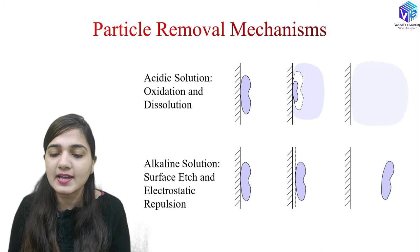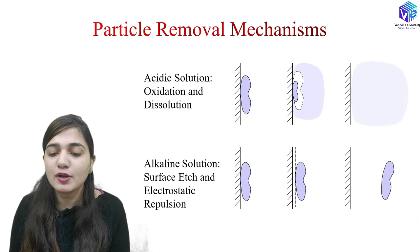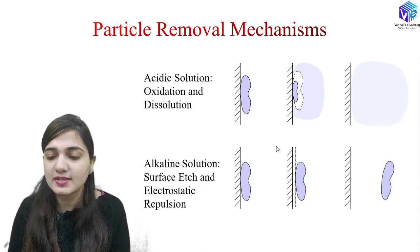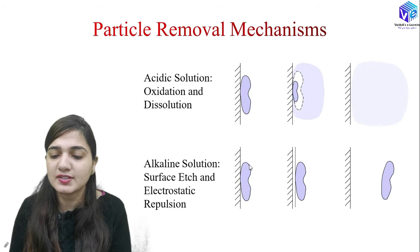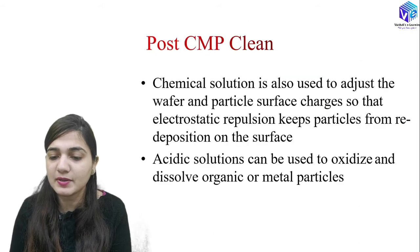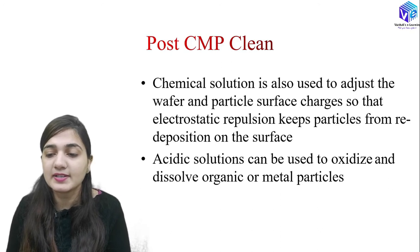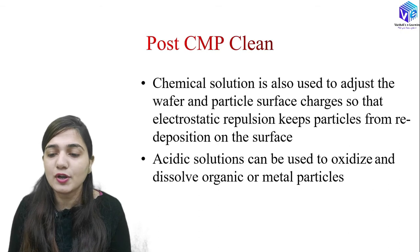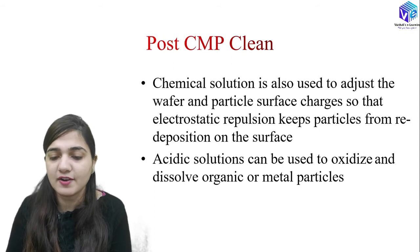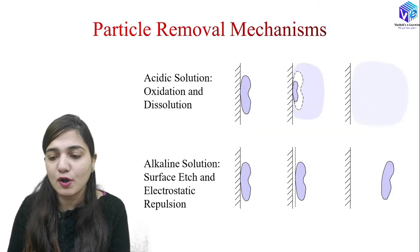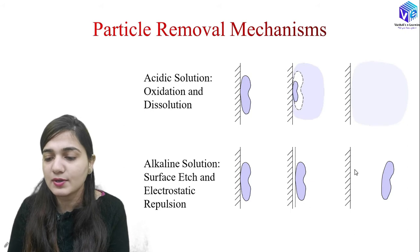After that we can also use the alkaline solution. The alkaline solution is going to do surface etching as well as electronic repulsion removal. Here you can see we have the surface with the contaminant particle. First we apply the alkaline solution, which adjusts the wafer and particle surface charges so that the electronic repulsion keeps the particle from redepositing on the surface. This is how we remove or etch away the contaminant particle.